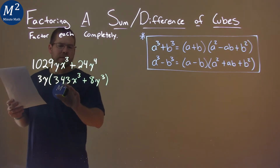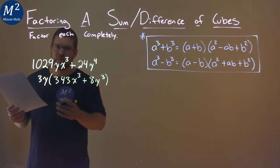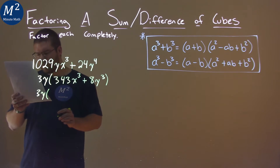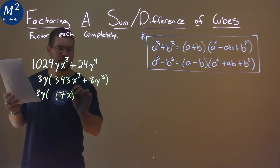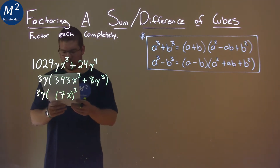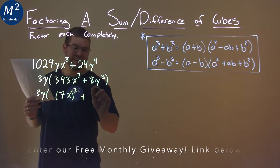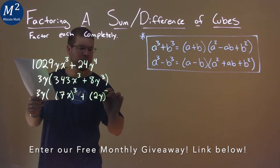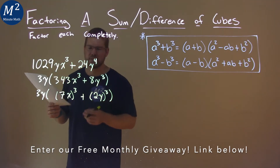Now from here, we want to see if this inside part can be the sum of two different cubes, and it can. 3y just comes down. 343 is the same as 7 cubed, so 7x all cubed equals 343x cubed. Same thing here — 8y cubed: 2y all to the third power, since 2 to the third is 8 and y to the third is y to the third.